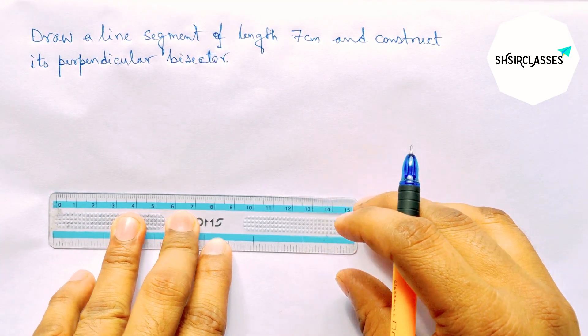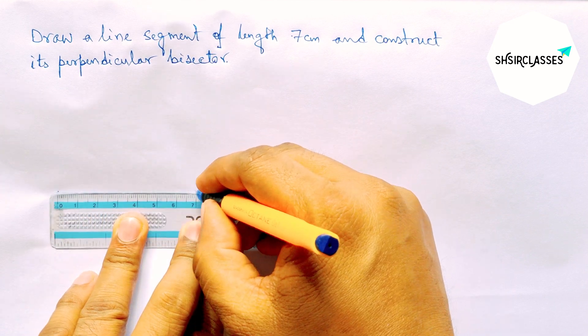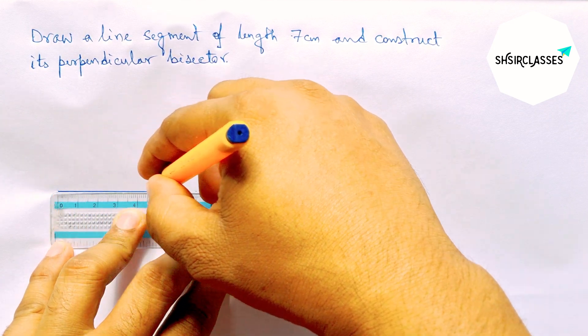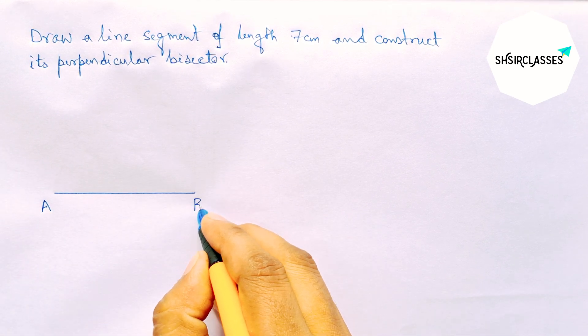First of all, let us draw here a line segment of length 7 cm. Okay, now labeling here point A and here B.